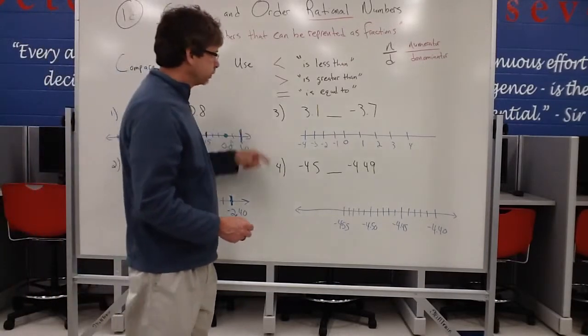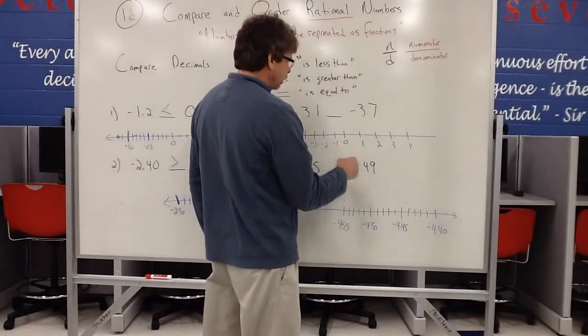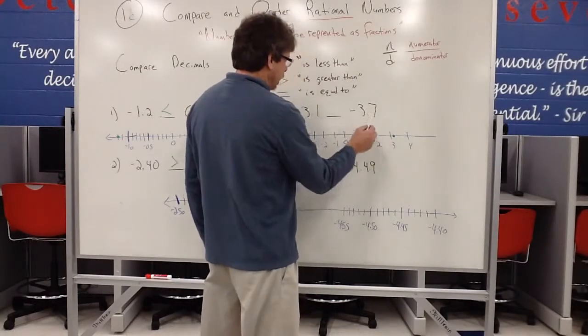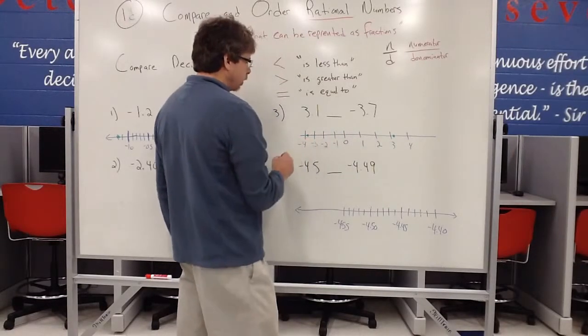Let's look at example 3 here. So negative 3.1, I notice that since it's a positive number, I know it's a little bit past 3. Negative 3.7, I know it's a little over halfway over here. It's probably closer to negative 4.